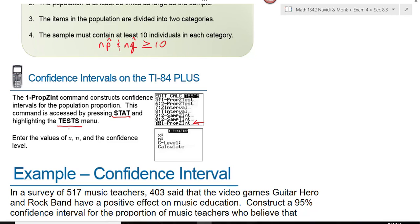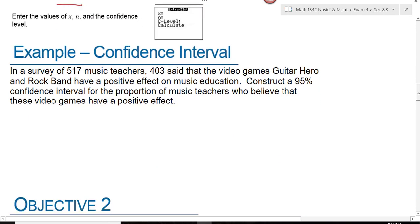The numbers you're going to be asked for on your input screen are X, N, and the confidence level. X is your number of successes, N is your sample size, and your confidence level you'll have to be told what it is.